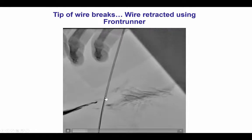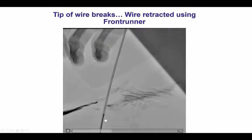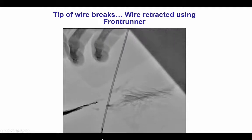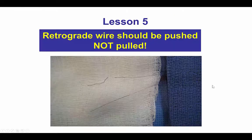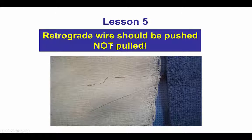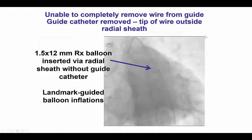We tried to be creative and used the Frontrunner catheter to catch and pull back the guidewire, but eventually we were unable to pull it all the way through. Moreover, the tip broke — so that is another reason why retrograde wires should not be pulled, but should be pushed instead from the antegrade guide catheter.